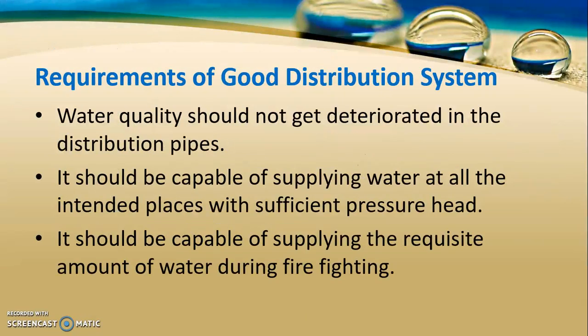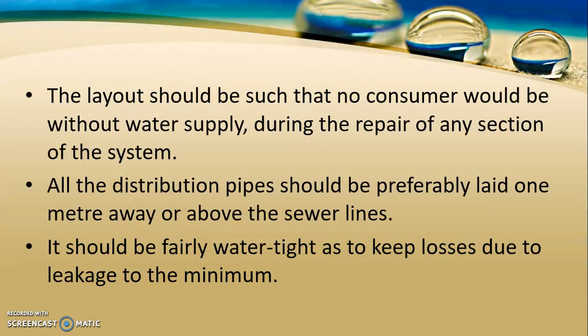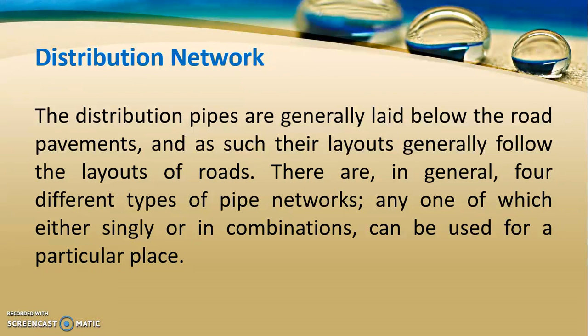The distribution system should be such that water quality does not deteriorate in the pipes. It should be capable of supplying water at all intended places at sufficient pressure, and of supplying required amounts of water during firefighting. The layout should ensure no consumer is without water supply. Pipes should be placed one meter above or below the service sewer line to avoid contamination, and should be fairly watertight. These distribution networks are mostly provided below road pavements, so their layouts generally follow the layout of the roads. Distribution networks will be discussed in another lecture.